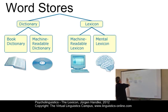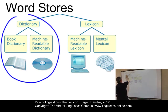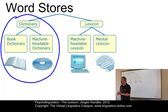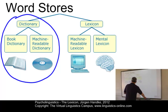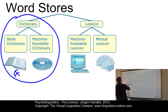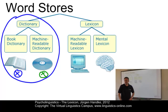On the one hand, we have dictionaries. Dictionaries are word stores that are primarily consulted to retrieve information about the words of a language. Today, dictionaries can be found in two variants: book dictionaries on the one hand, and machine-readable dictionaries on the other, which can either be delivered on CD-ROMs or contained on the web.